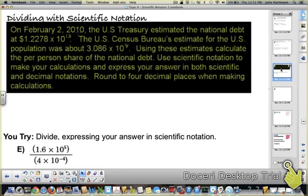So now we're dividing. This gives you a little scenario. On February 2nd, 2010, the U.S. Treasury estimated the national debt at 1.2278 times 10 to the 13th. Now, the population was about 3.086 times 10 to the 8th.